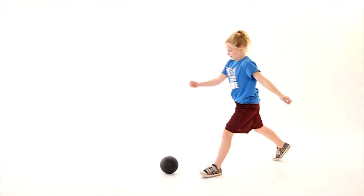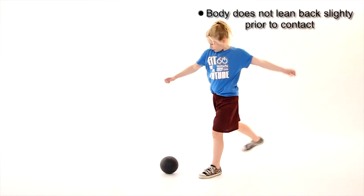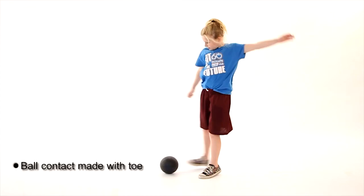The knee of the kicking leg is not bent during the backswing. The body does not lean back slightly just prior to contact. Ball contact is made with the toe.